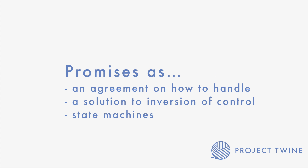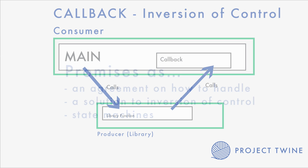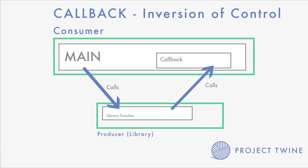Rather, promises were built to solve a problem that happens when you write async code, and that is called the inversion of control. When you use code that requires callbacks, you're essentially inverting control of your program to somebody else. You're expecting that the person who receives your callback is going to use your callback properly, and when you're doing that you're placing a lot of trust in that person.